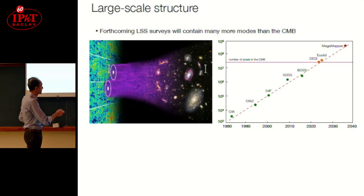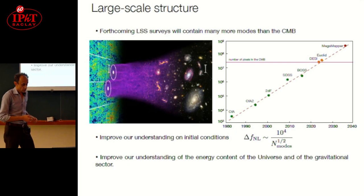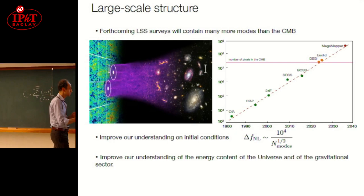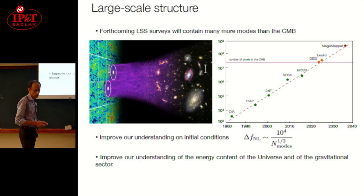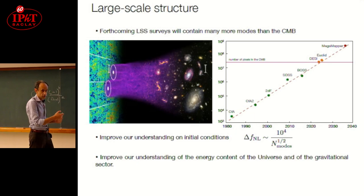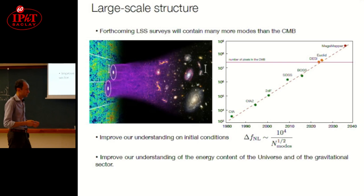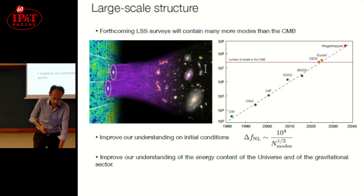For instance, today, we are roughly here, we start collecting a number almost larger than the CMB. Why is this important? First of all, this could be useful to improve our understanding of initial conditions, so the constraints on fNL are inversely proportional to the square root of the number of modes, as you can expect. And also improve our understanding of the energy content of the universe. Surveys are at later time, so they probe the energy content today, and also of gravitational sectors, so they constrain, for instance, general relativity on very large scales, or tell us if there is some sort of modification of gravity.